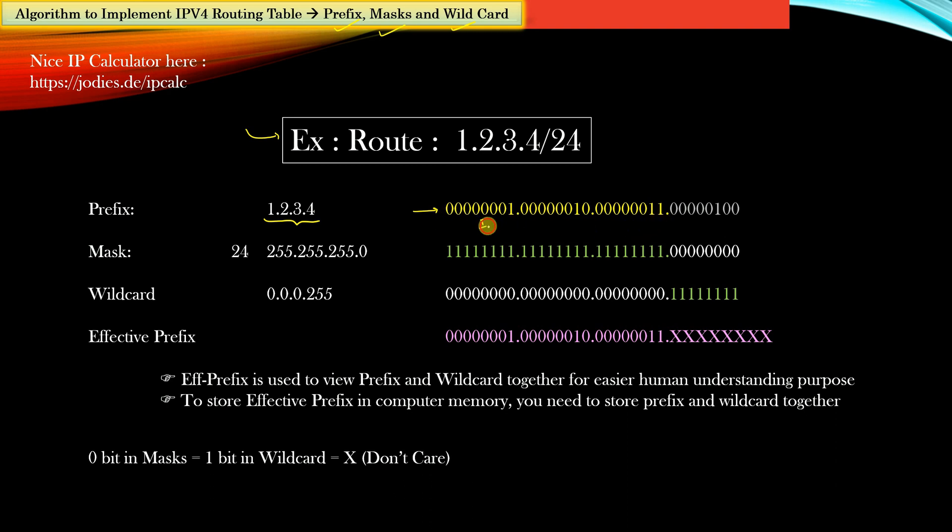This is the first octet, this is the second octet, this is the third octet, and this is the fourth octet. Here octet means a byte. So prefix is nothing but the actual IP address part of a route.